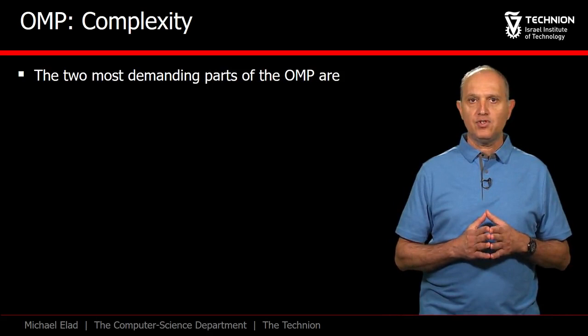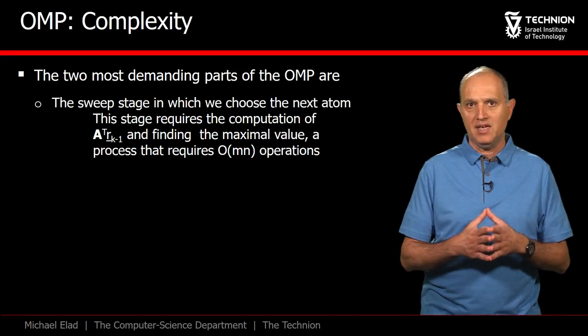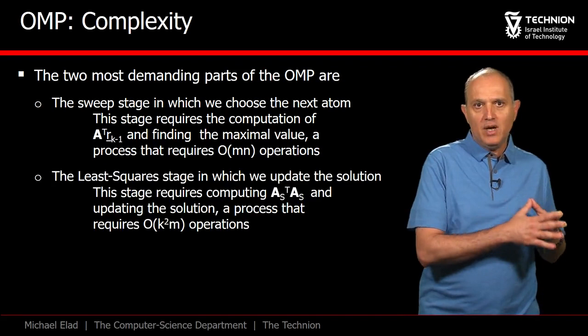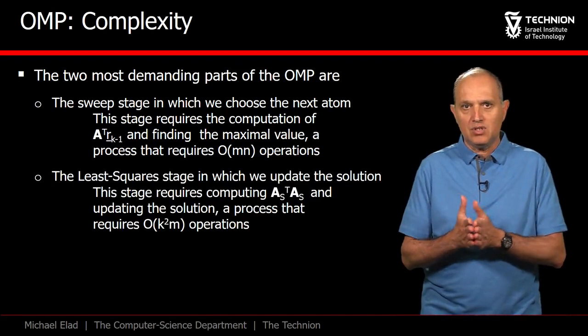To summarize, the OMP involves two main steps of computations. The first is the sweep stage that searches for the next atom to add. This requires the multiplication of A transpose by the residual vector, thus requiring MN operations.